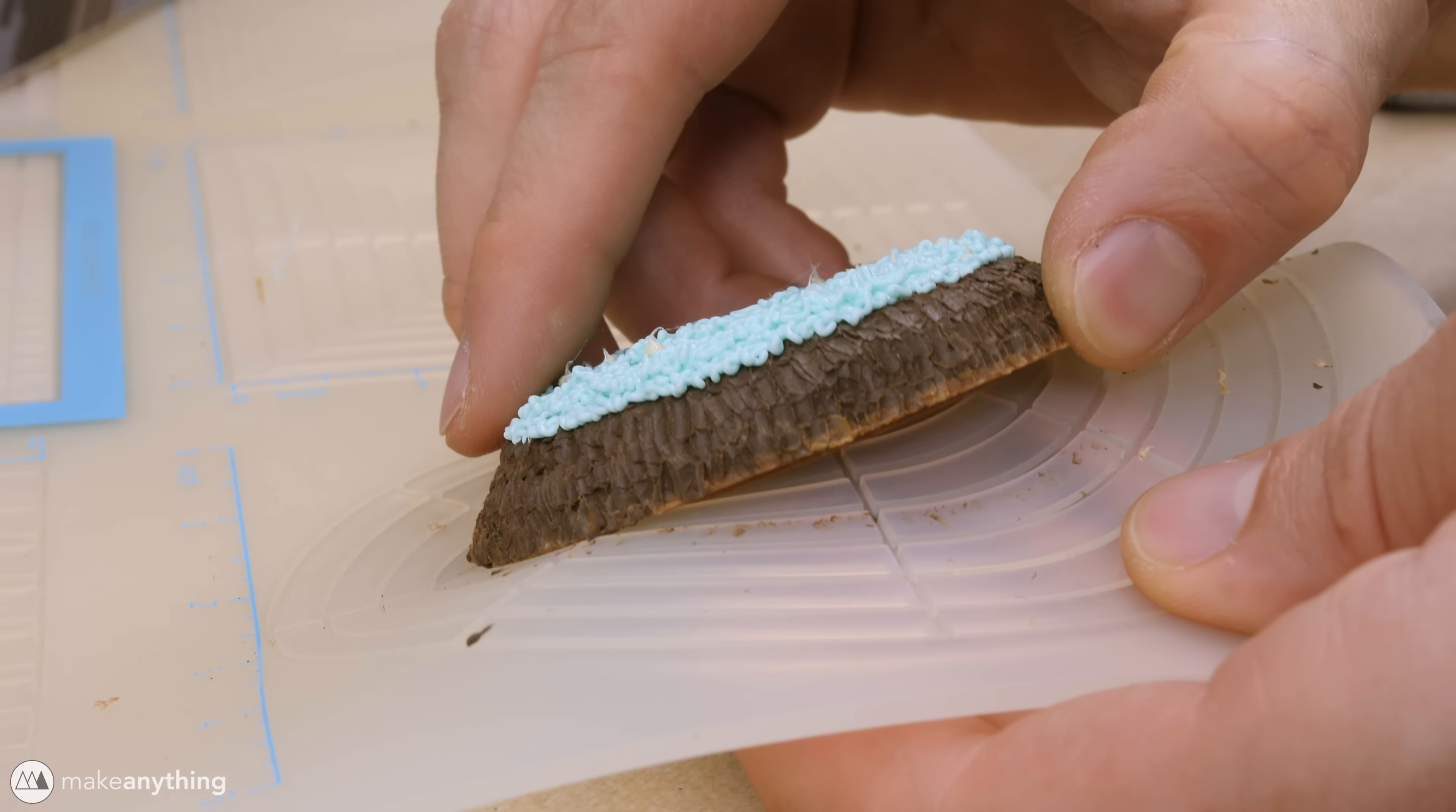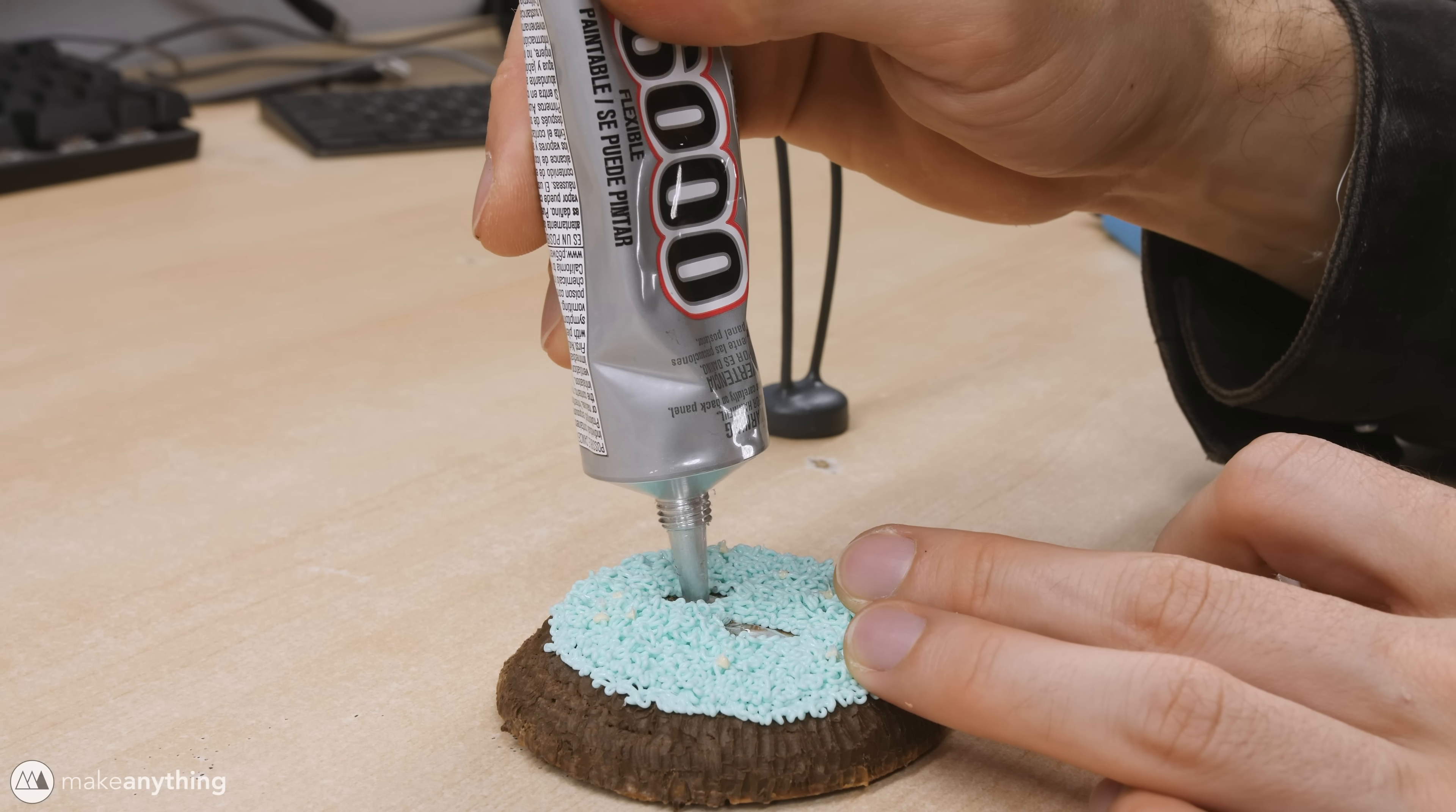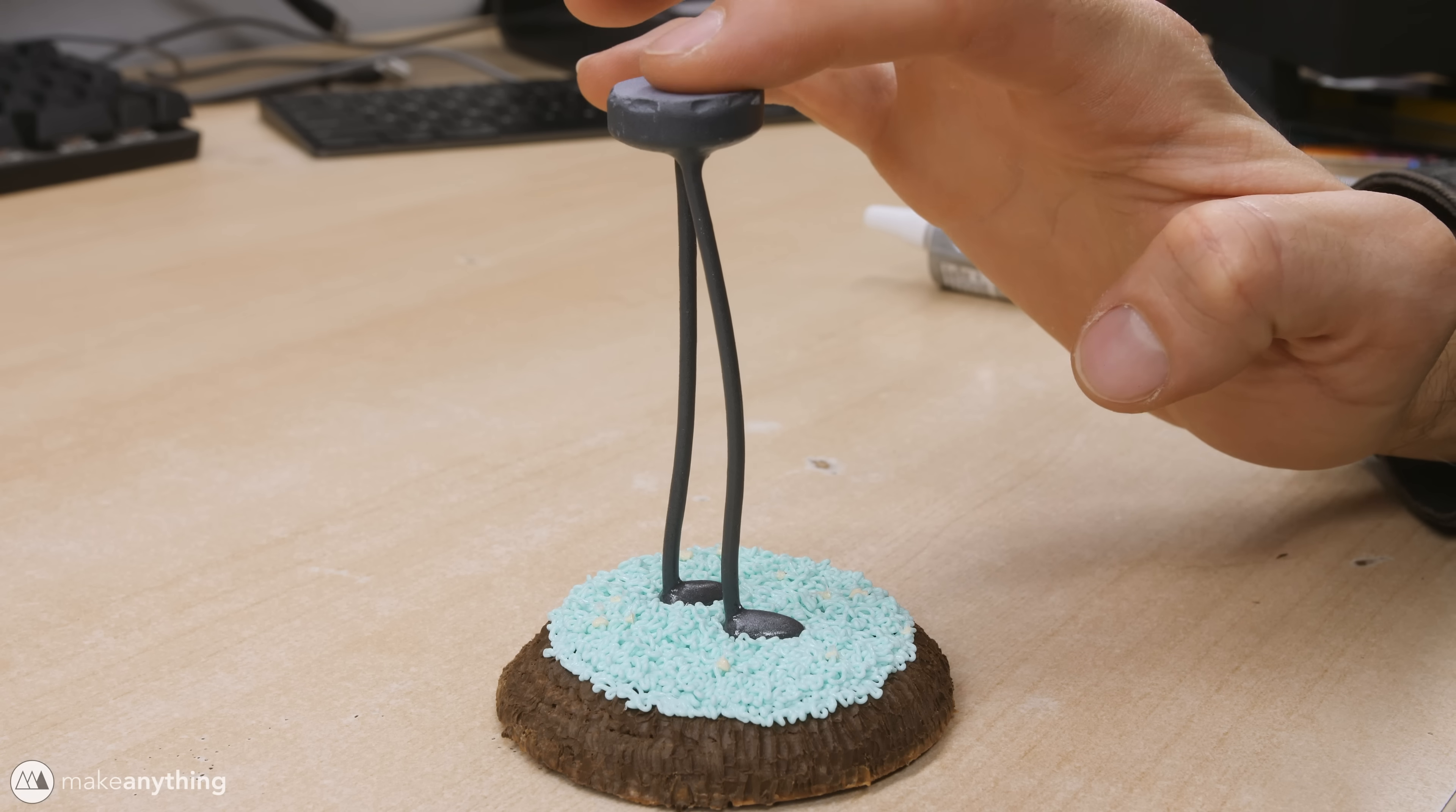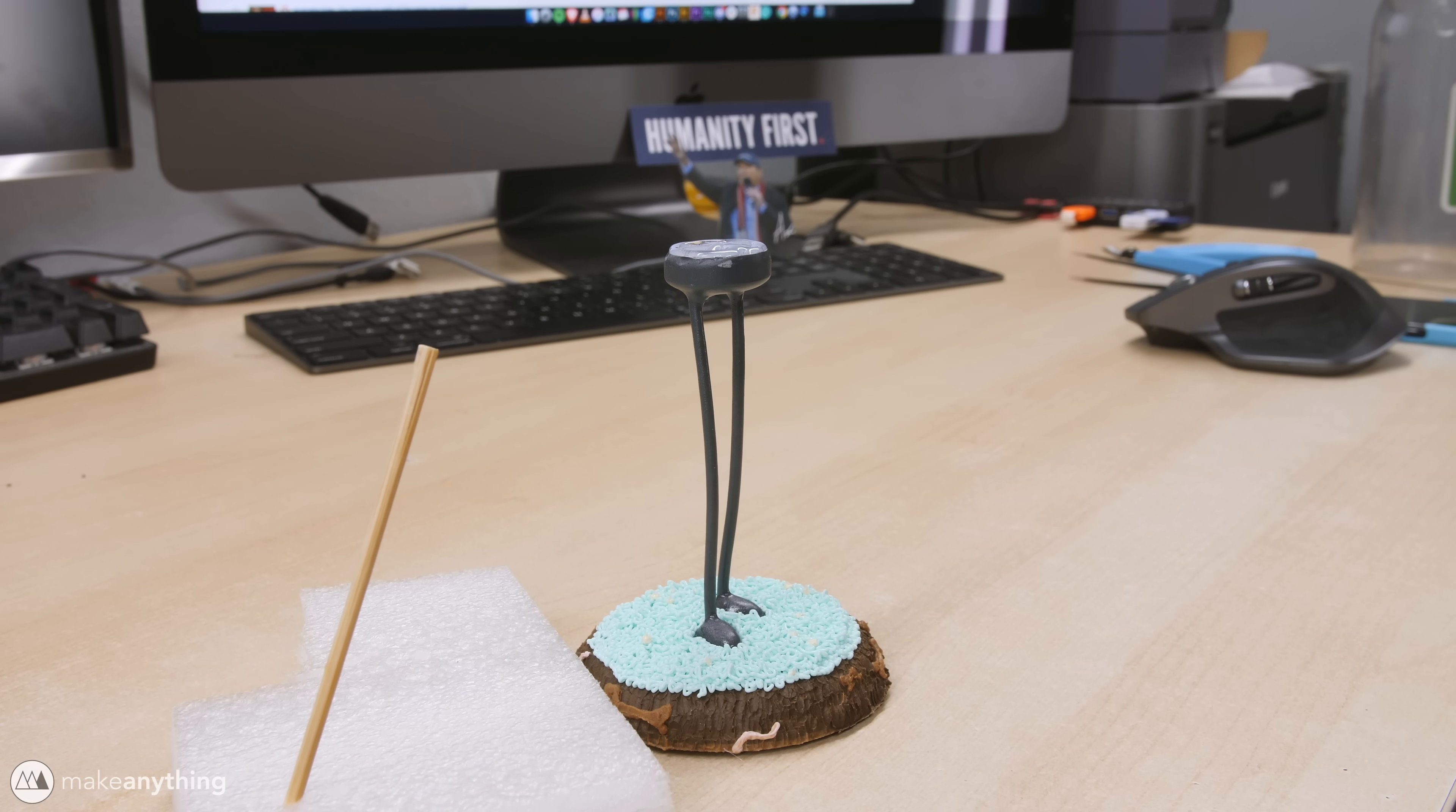Cool now we can peel that off of our base. I'll put down some dabs of E6000 in these little footholes that I left for our model and I'll set the legs of our model into place. I'll give that glue about an hour to start drying and then I'll go ahead and use some more E6000 to glue on the top part of our model.